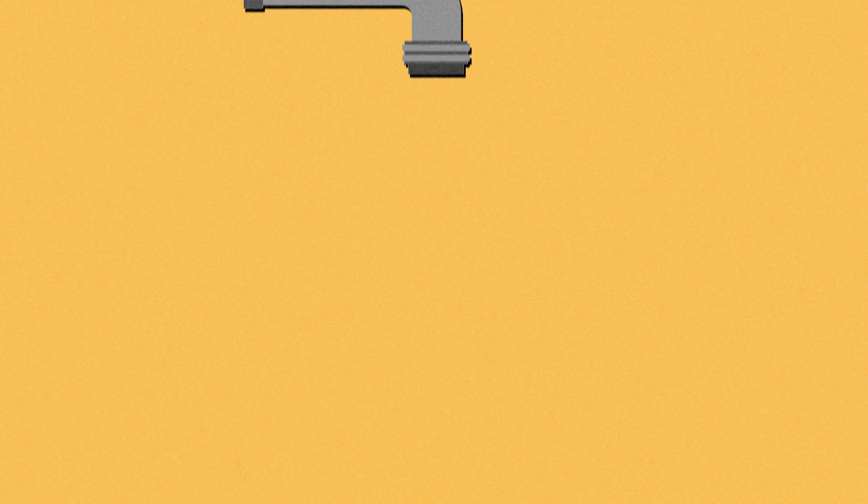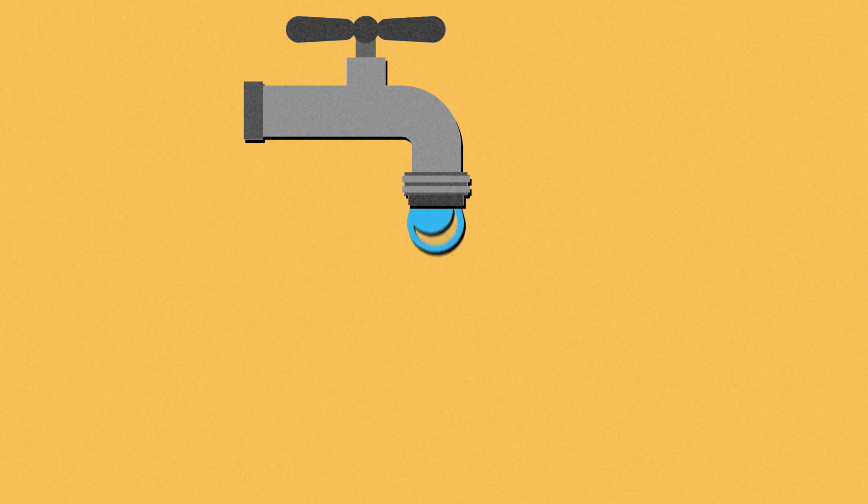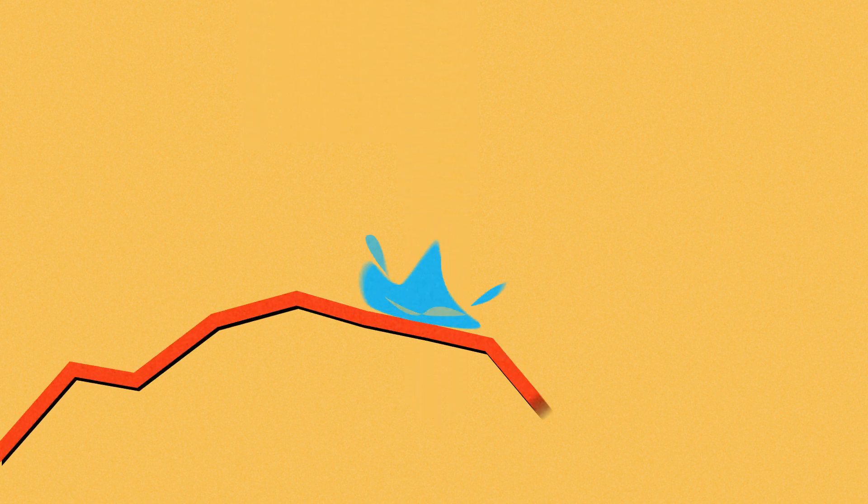That's why it's important to gradually reopen so we don't overwhelm the system. Like slowly opening a faucet rather than letting loose a fire hose, a staged reopening promotes control.